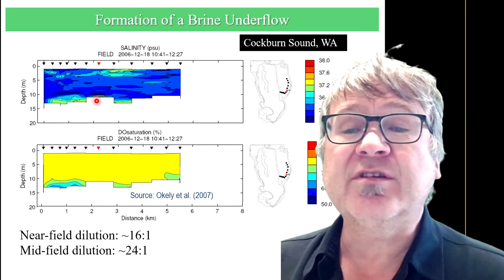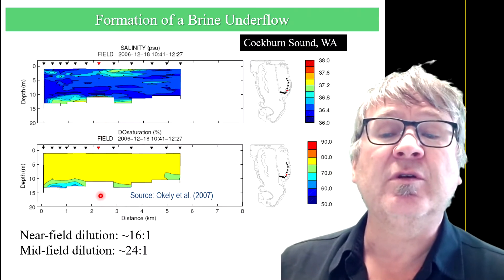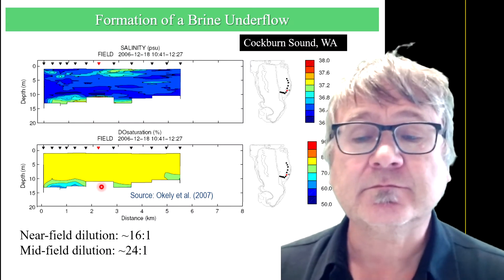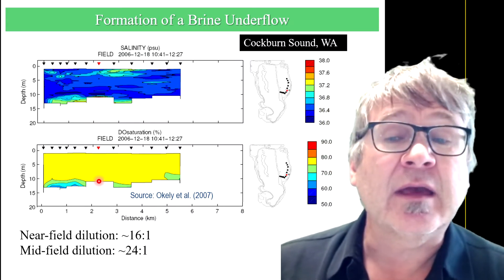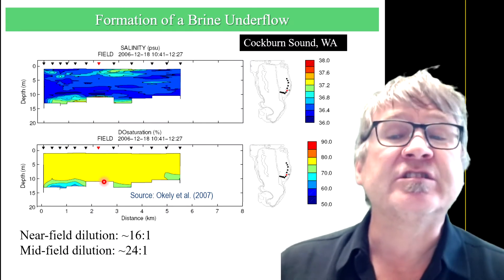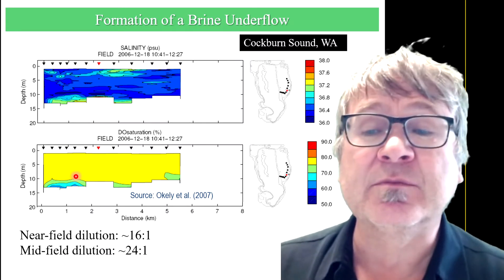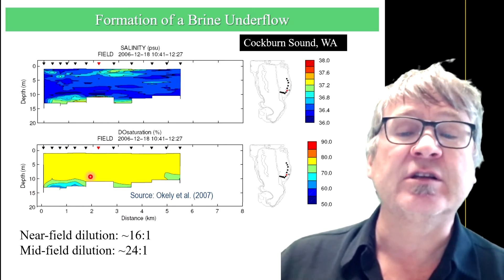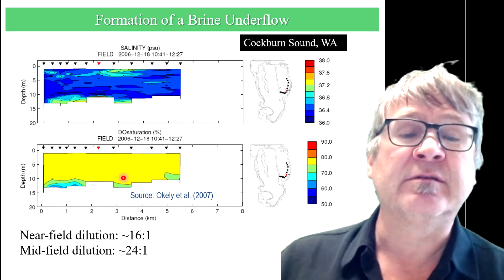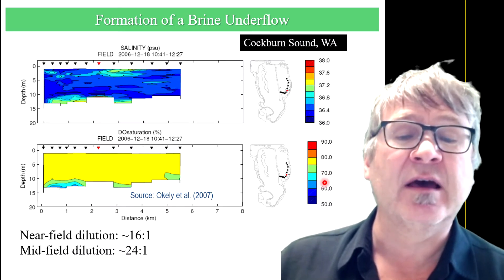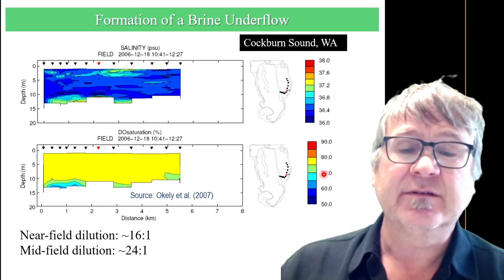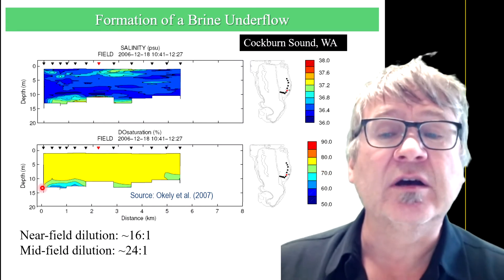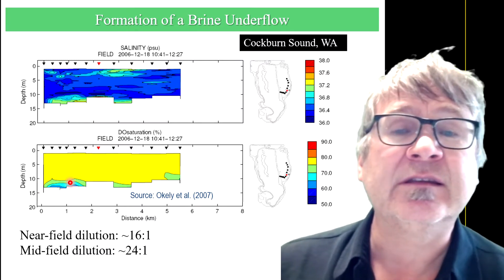In the bottom distribution, you can see dissolved oxygen saturation. In the regions where you have elevated near-bottom salinity, you get a lower dissolved oxygen saturation — where the saturation has dropped to something like 70 percent. This is the signature of the discharge.